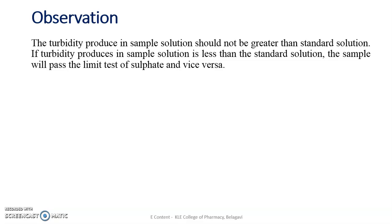Observation: if the turbidity produced in the test is more than the turbidity produced in the standard, then it fails the limit test. If the turbidity produced in the test is less than the turbidity produced in the standard, then it passes the limit test. More turbidity compared to the standard means the sulphate impurity content is higher; less turbidity means the sulphate ion content is less than the standard.